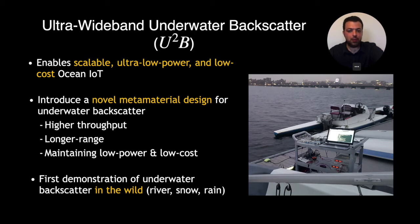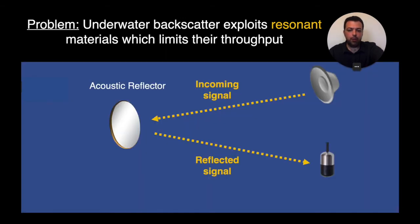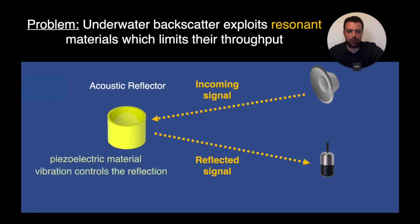Before explaining more about this technology, I would like to first tell you why our prior design was limited in throughput. The main problem that we had to face is underwater backscatter exploits resonant material which limits their throughput. Let me explain what I mean by this. Recall that in underwater backscatter communication we use acoustic reflector to modulate the reflection and communicate. At the heart of our acoustic reflector we are using what is called piezoelectric material. Indeed, the way that we control the reflection was by tuning the vibration of this element. The problem is while controlling the reflection to communicate relies on tuning the vibration of the piezo, the piezo itself can only vibrate at its resonance frequency.